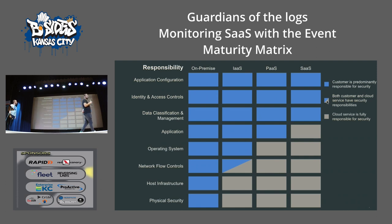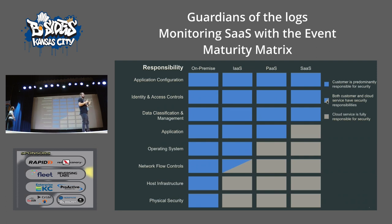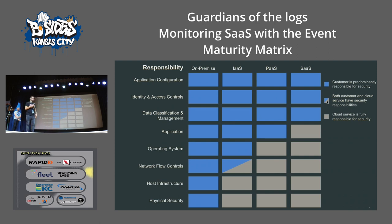Does this look familiar? This is the shared responsibility model. On-premises infrastructure required you to worry about the physical data center, purchasing hardware, networking, and all layers of software. As we moved to infrastructure as a service, you lose responsibility for physical security and host infrastructure, but you're still responsible for the operating system, gold images, patching — all still your responsibility. The opposite end is now Amazon, Azure, or similar cloud providers.